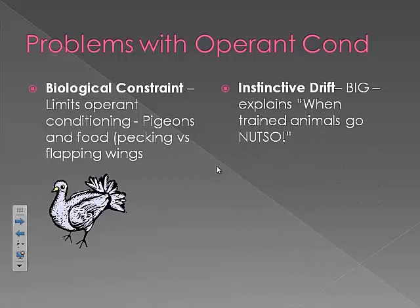Another example of the limitations of operant conditioning is instinctive drift — that animals, once they learn a difficult behavior that was constrained by their biology, might learn the behavior but over time drift back to their instinctive behavior. So that pigeon trained to flap its wings for food might eventually start pecking again instead. Instinctive drift can explain circus animals and trained animals going wild. You can train a grizzly bear to do weird tricks, but when that animal is surprised or frightened, it could drift back to its instinctive behavior, which could be violent.